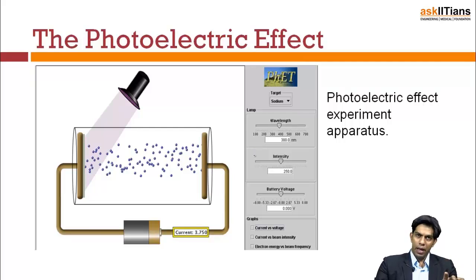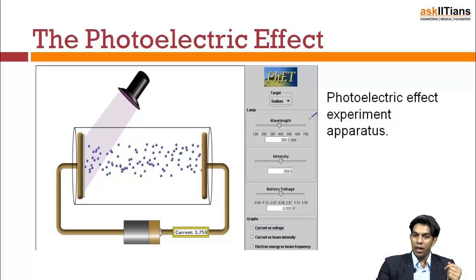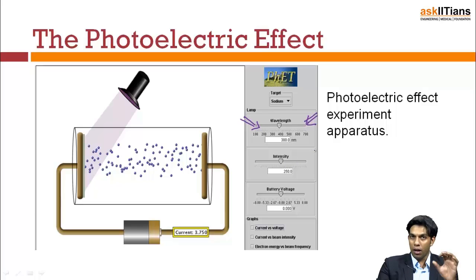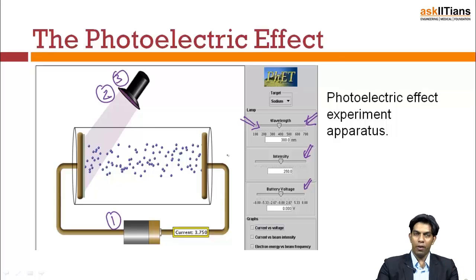This is the exact setup — you will be shown a video corresponding to photoelectric effect in coming slides. As you can notice, there is a wavelength selector so I can select the light I am throwing on the metal plate, and the intensity of the light as well. There is also a battery voltage. So there are three parameters I can play with: the voltage, the intensity of the light, and the wavelength of the light.